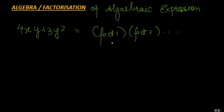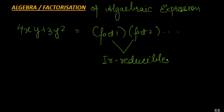The important thing here is that these factors should be in their irreducible state. When we say irreducible state it means that if they are numbers they have to be prime numbers, and if they are algebraic factors then they should be in their lowest state from which we cannot further simplify.